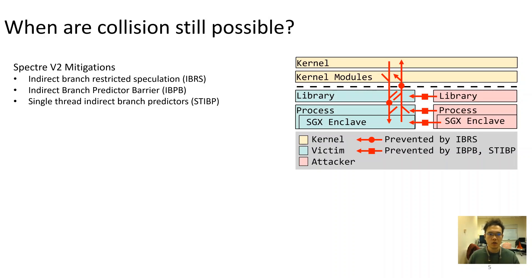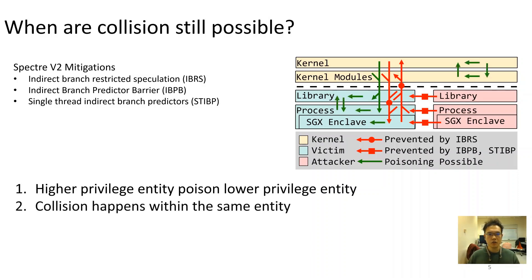First, when a branch located in a higher-privileged software entity such as kernel writes into BTB, a branch in a lower-privileged software entity could be affected by reading from the same BTB entry. Second, two branch instructions located within the same software entity could collide in BTB. This is possible due to address compression and other optimizations that take place inside BTB. So now the question arises.